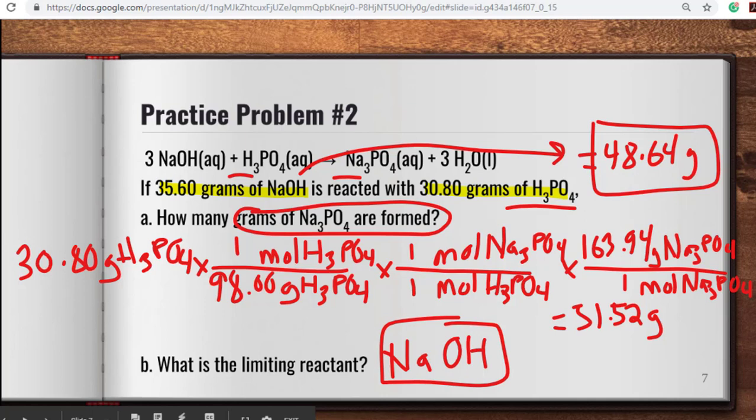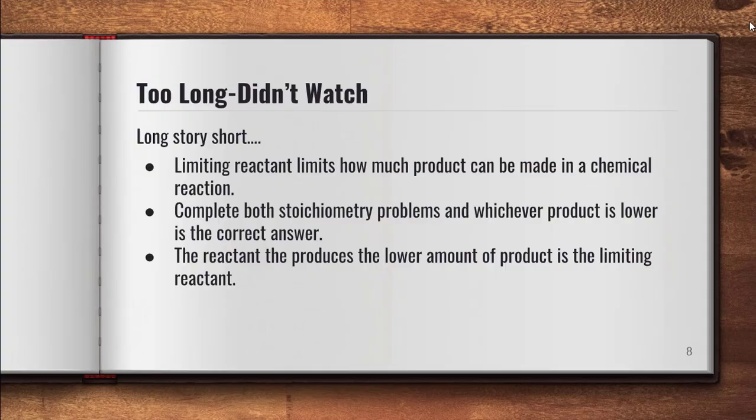So continue working on these. Think about these types of problems as you move forward. Nothing too different here, just another type of stoichiometry problem we can complete. Hopefully now you have a good idea of how these types of problems work. Limiting reactant problems just simply limit how much product can be made in a chemical reaction. What you need to do is complete both stoichiometry problems and whichever product lower is the correct answer. And the reactant that produces the lower amount of product is considered the limiting reactant.